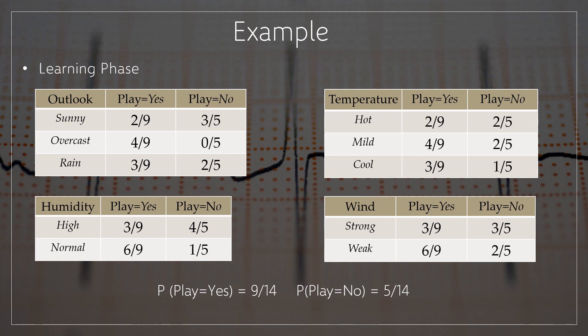Taking the example of outlook with values sunny, overcast, and rain: for outlook equal to sunny, play equal to yes equals the number of days where outlook equal to sunny and play equal to yes, divided by the number of days where play equal to yes, which equals 2 by 9. For outlook equal to sunny, play equal to no equals 3 by 5. For outlook equal to overcast, play equal to yes equals 4 by 9 and play equal to no equals 0 by 5. For outlook equal to rain, play equal to yes equals 3 by 9 and play equal to no equals 2 by 5.